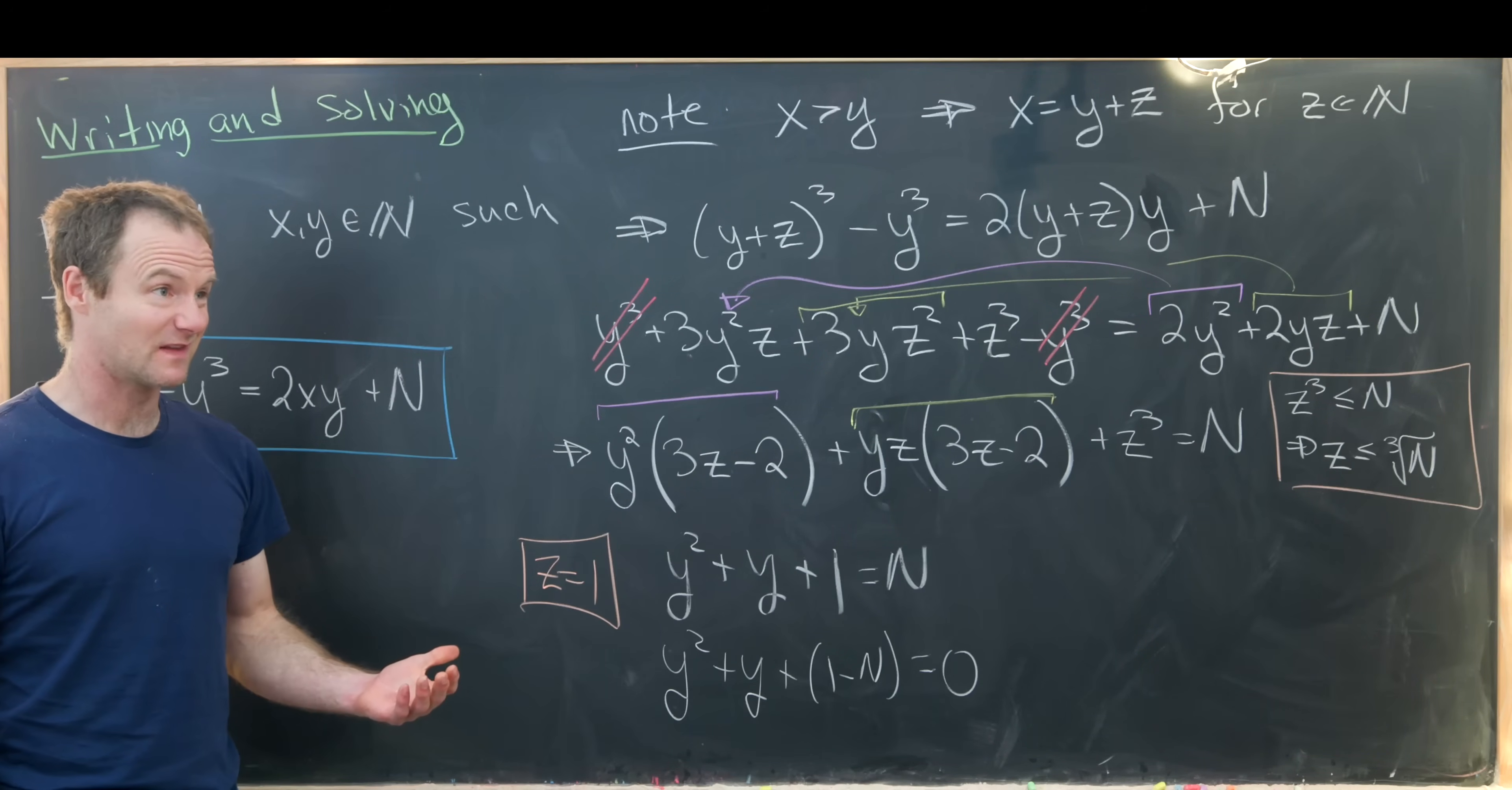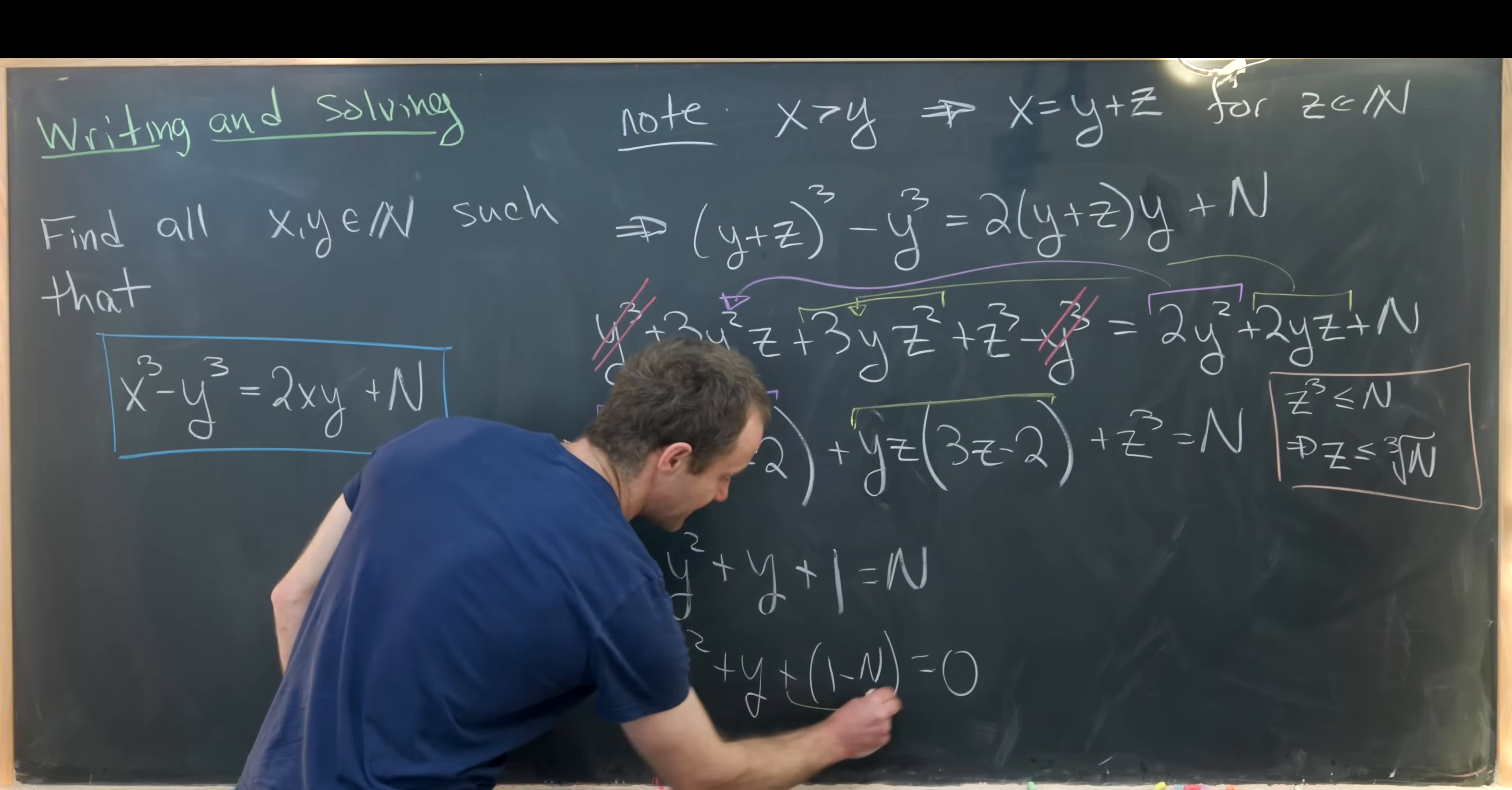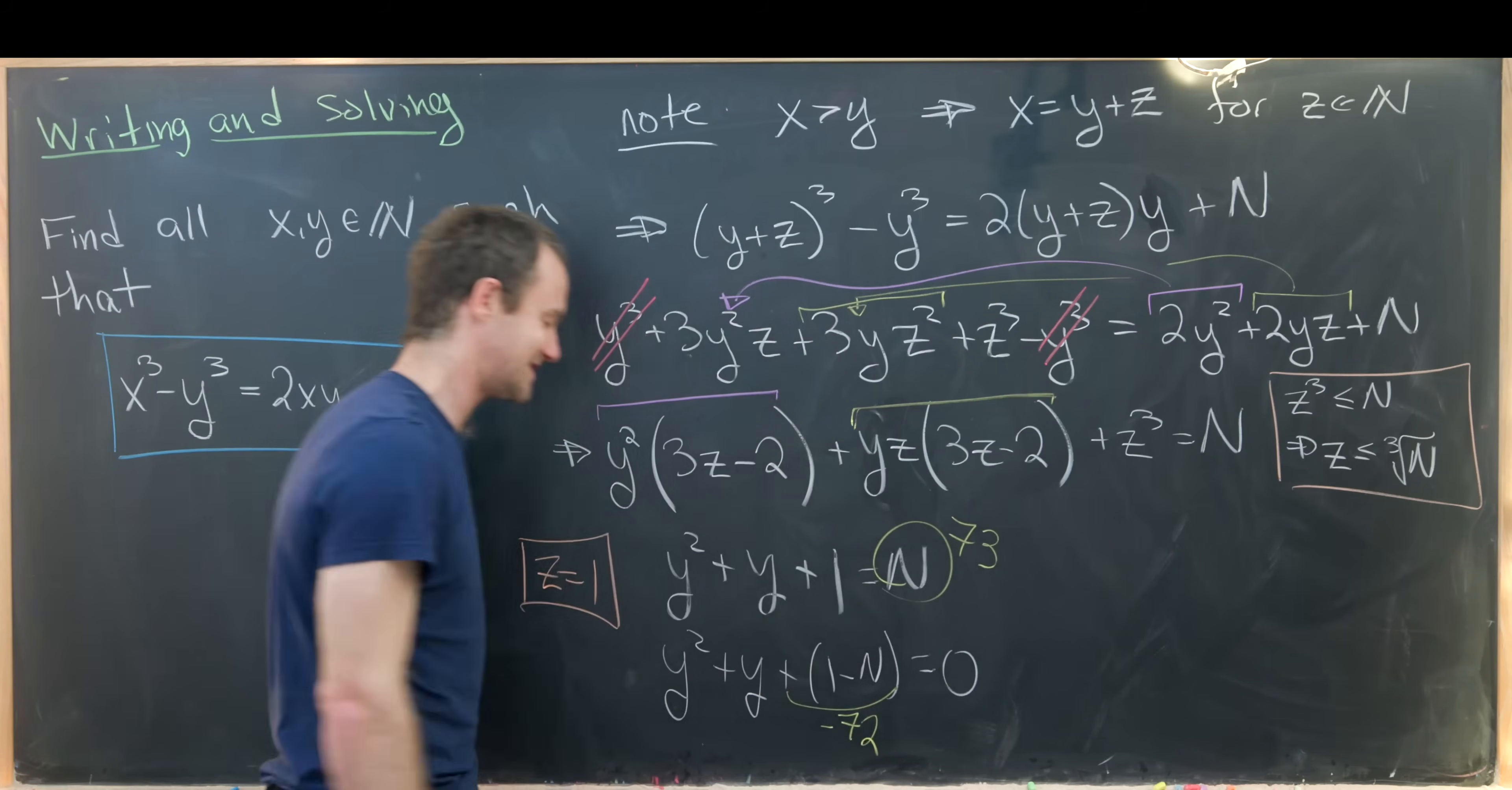So that means we need something like 3 times 4 or 4 times 5 or 5 times 6 or 6 times 7, or maybe we'll use 8 times 9. So that means we would want all of this to be equal to negative 72, which means our N would be equal to 73.